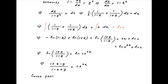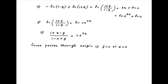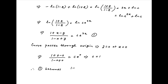Now we are given that the curve passes through the origin, which means y is equal to 0 when x is equal to 0. Substituting this in the above solution, we get (1 plus 0 minus 0) divided by (1 minus 0 plus 0) is equal to c times e raised to the power 0, which implies that c is equal to 1. Substituting back, we get (1 plus x minus y) divided by (1 minus x plus y) is equal to e raised to the power 2x.